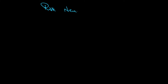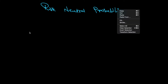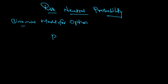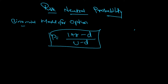Risk-neutral probability comes under the topic of the binomial model for option pricing. In this video, we are going to do the derivation of the formula for risk-neutral probability. The formula goes like this: probability p is equal to 1 plus the rate of interest, minus the downtick, divided by uptick minus downtick.